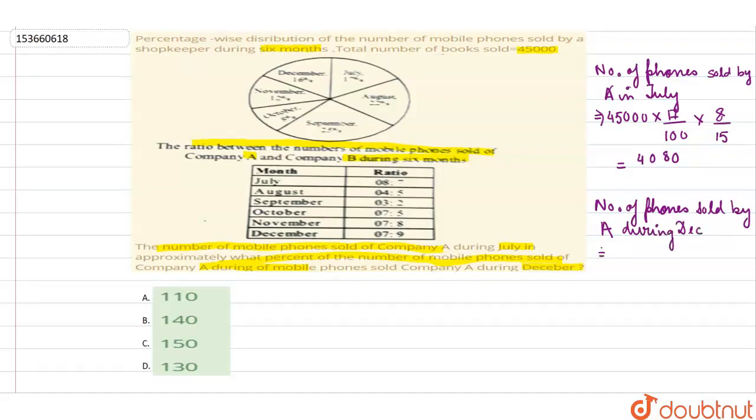Number of phones sold by company A during December. That ratio is 7 is to 9. So the ratio is 7 and total is 16. So we get 3,150.